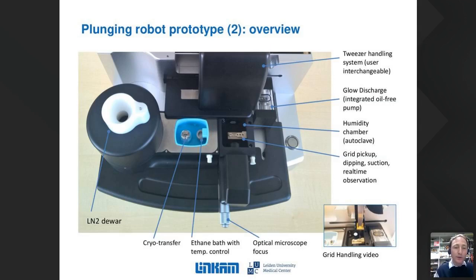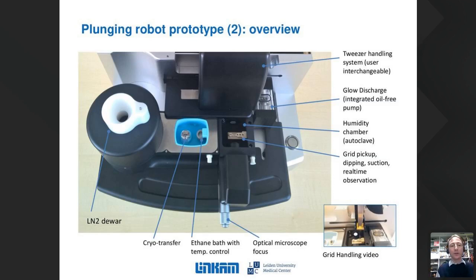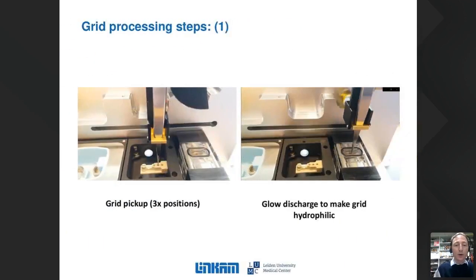Looking at the different components: on the left in blue is the cryo compartment and the small container for plunging. On the right-hand side is the glow discharge unit, the pickup locations, observation and film thickness adjustment position, and sample dipping. The micrometer at the front is the built-in microscope to allow real-time monitoring. On the left you can see the automatic grid pickup where you place the sample grid ready for processing.